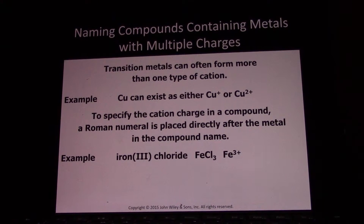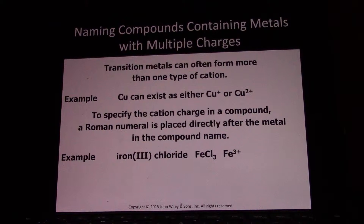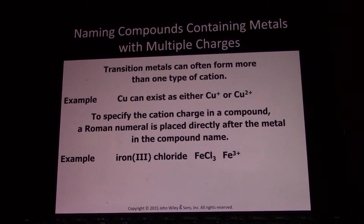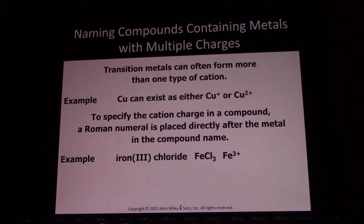To specify the cation charge, we can use the Stock system, in which we place a Roman numeral in parentheses after the metal ion to indicate the charge. For example, iron three chloride.